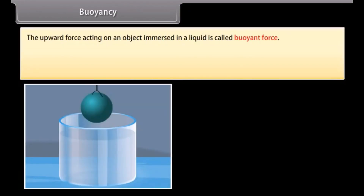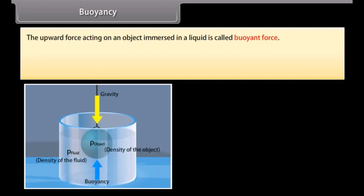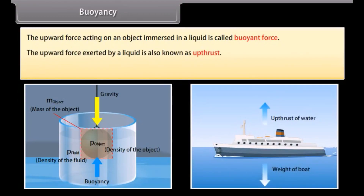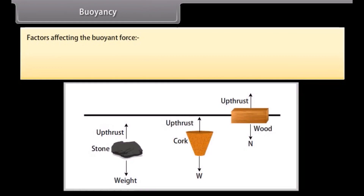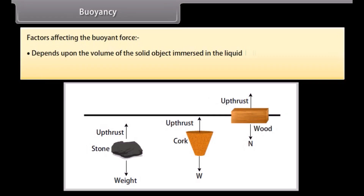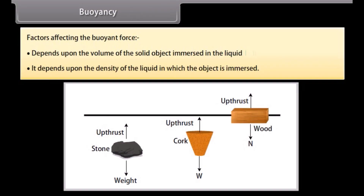Buoyancy. The upward force acting on an object immersed in a liquid is called buoyant force. This upward force exerted by a liquid is also known as upthrust. The tendency of a liquid to exert an upward force on an object placed in it is called buoyancy. Buoyant force depends upon the volume of the solid object immersed in the liquid and the density of the liquid in which the object is immersed.